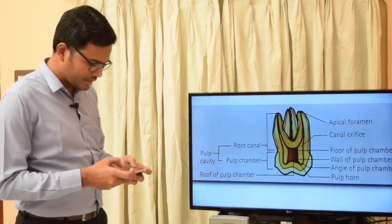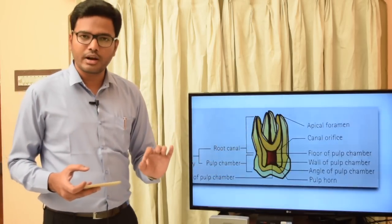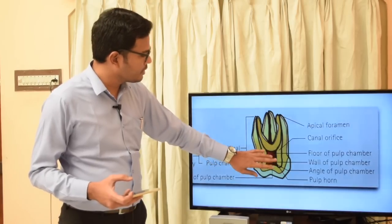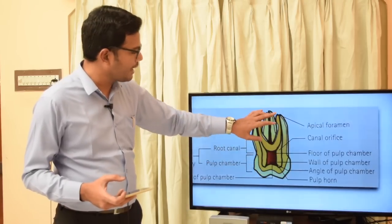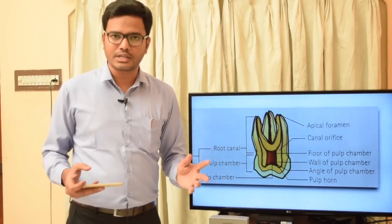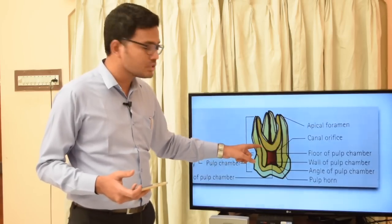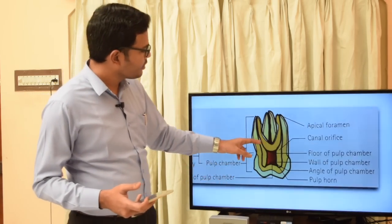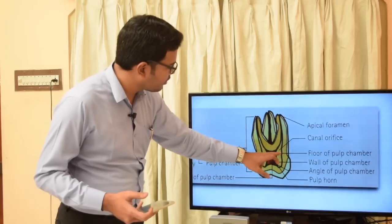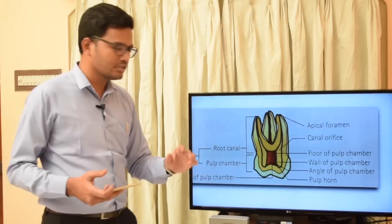In a posterior tooth you can see complex pulp cavity anatomy. There is a distinction between the pulp chamber and root canal at the root canal orifice — not a separate structure, but the continuation of the pulp chamber into the root canal, found almost at the level of the cemento-enamel junction. Within a molar you can see the apical foramen, root canal orifice, floor and roof formed by dentin, pulp horns under the cusps, and corresponding walls.